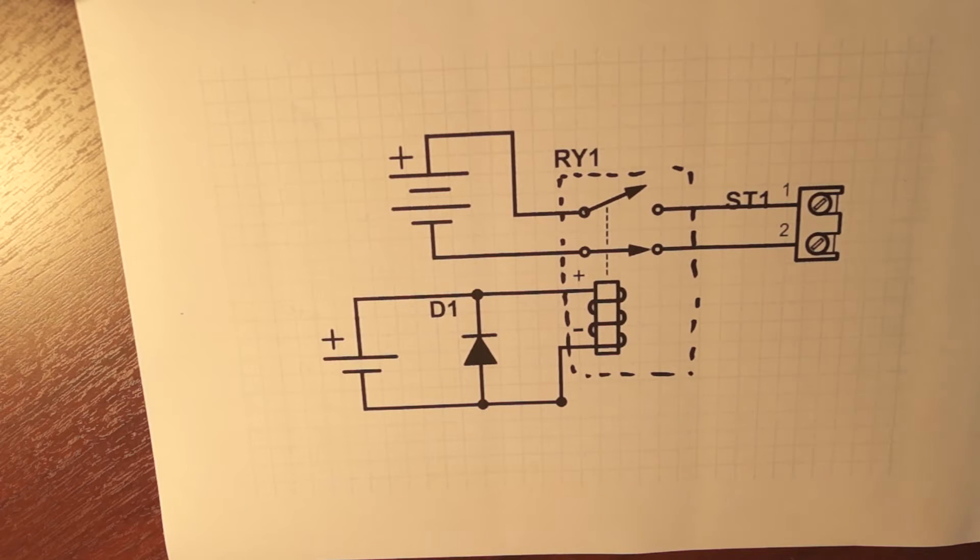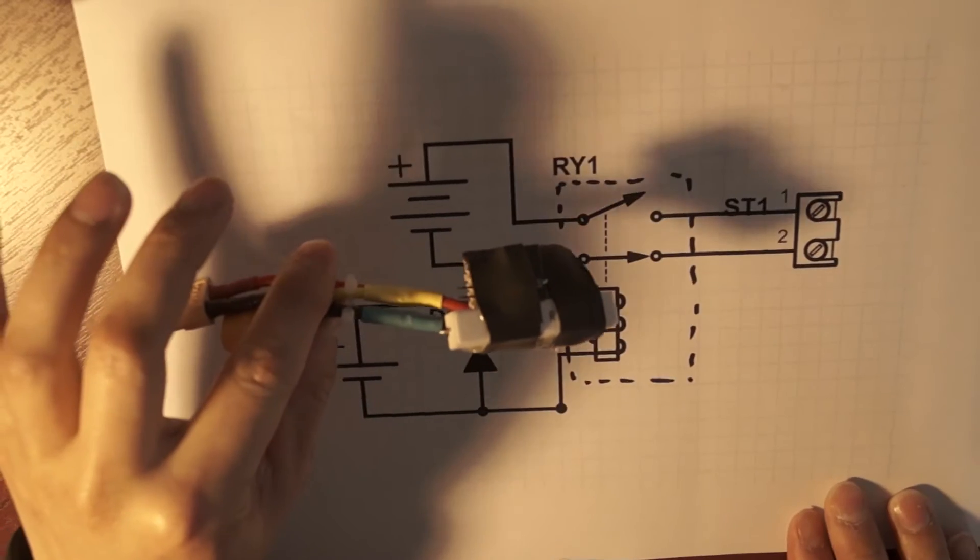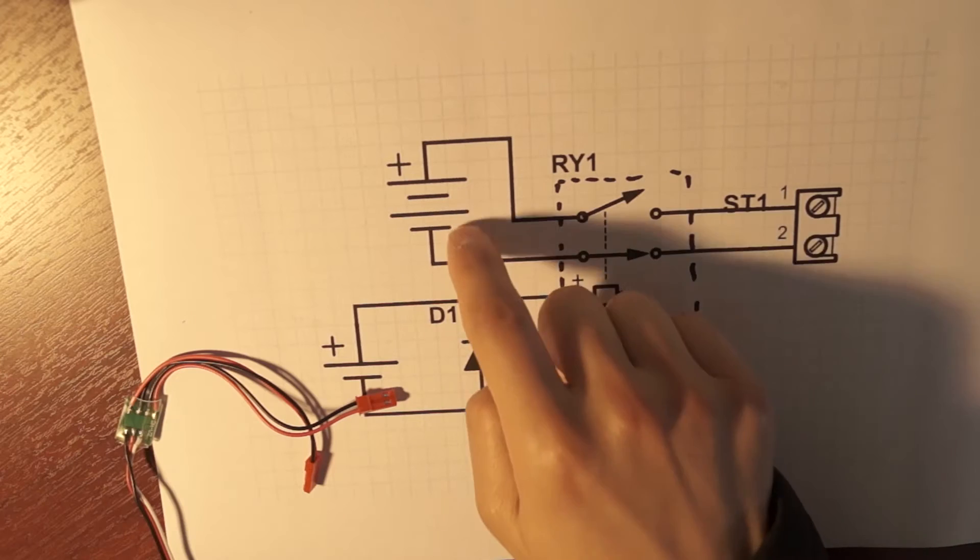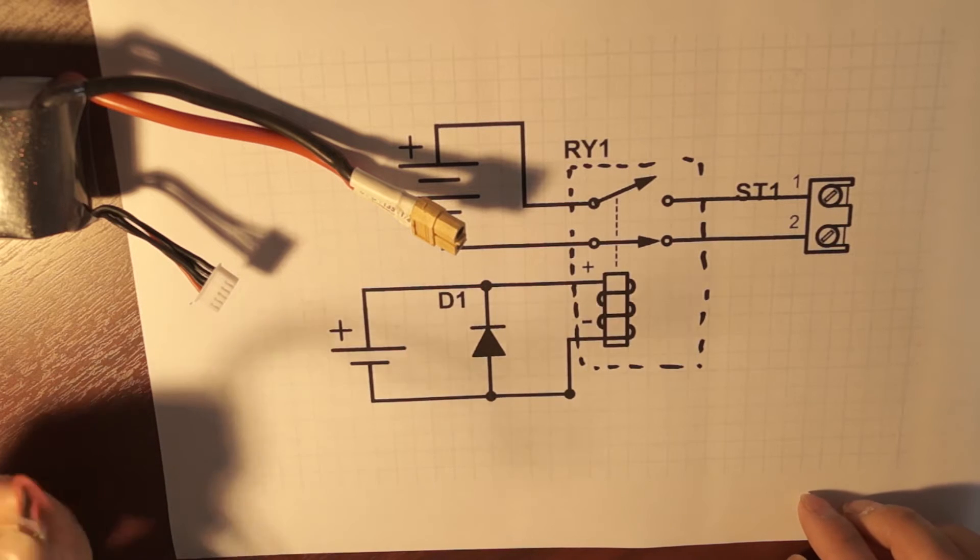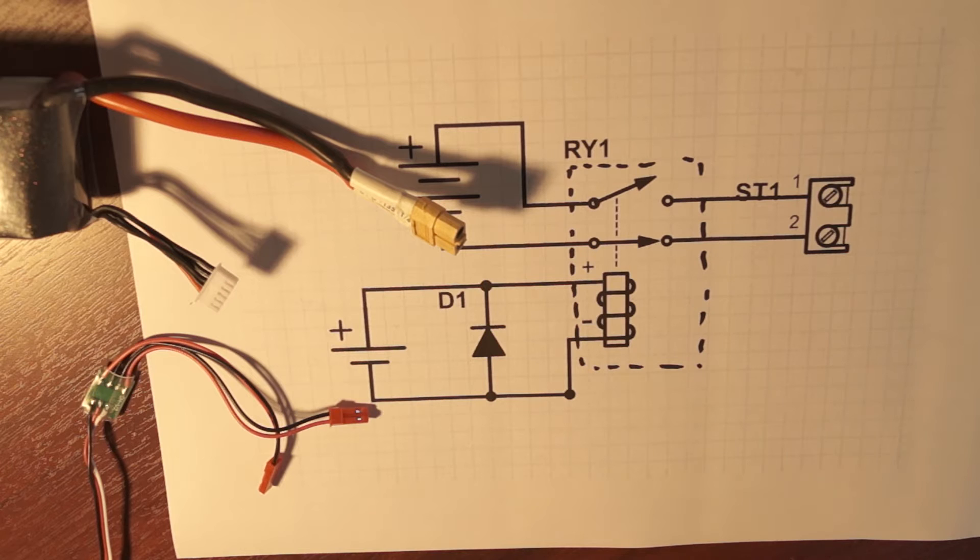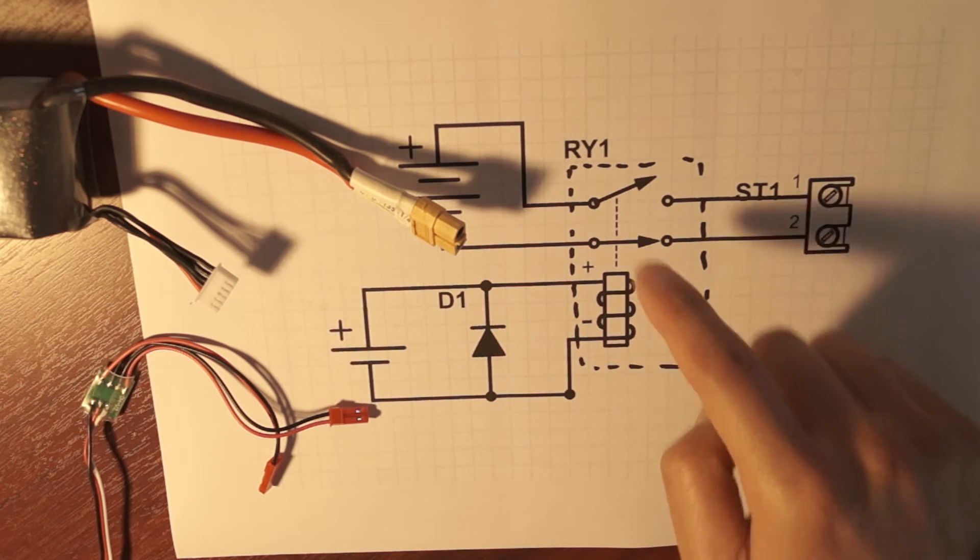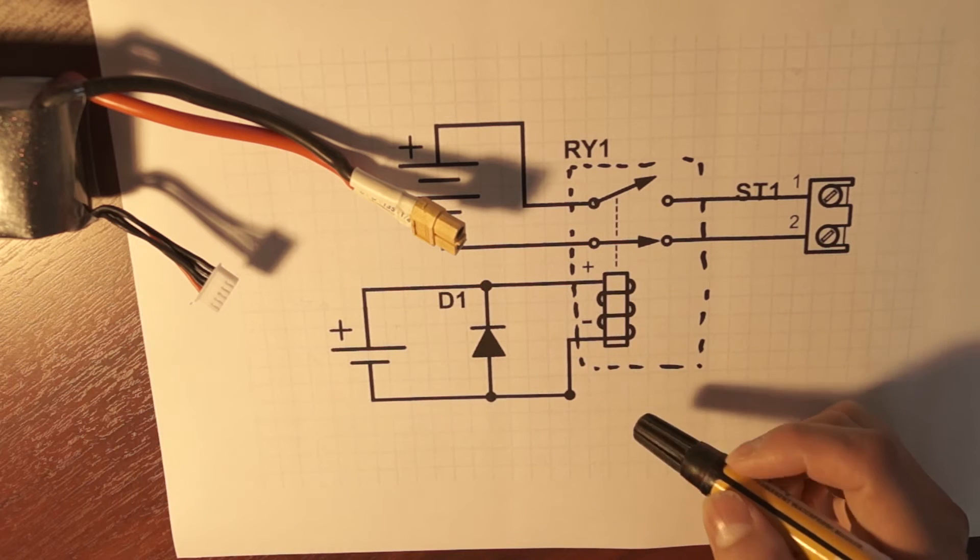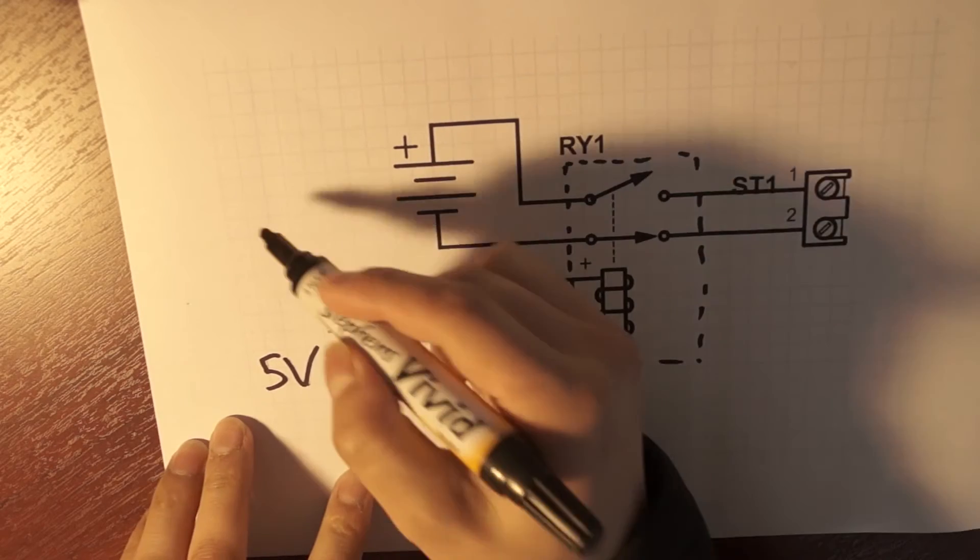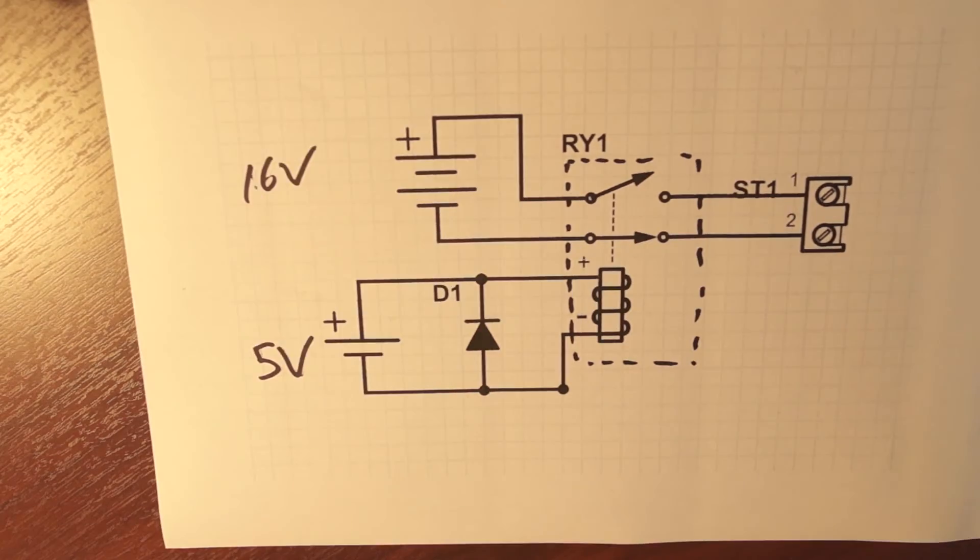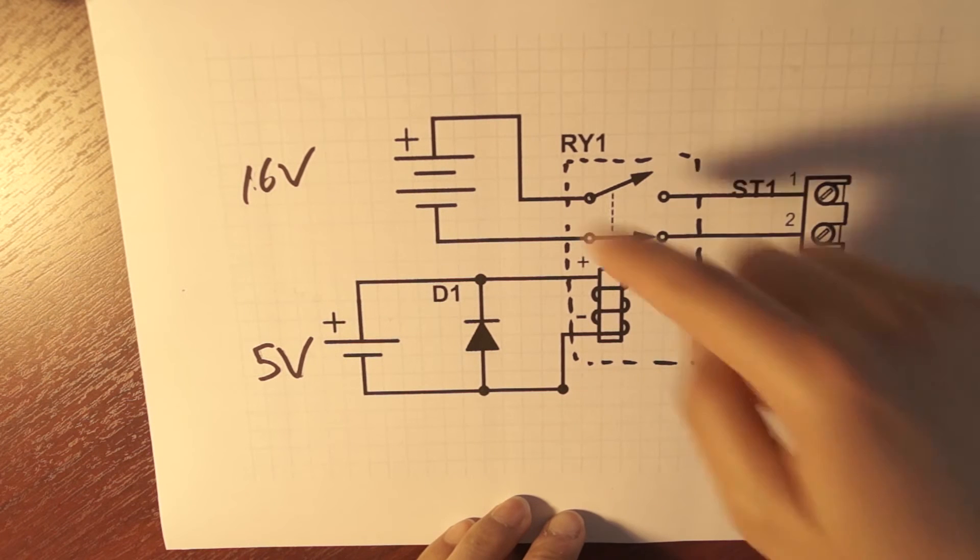So this is the electronic schematic for this driver circuit here. This voltage source represents the output from the RC switch, and this voltage source represents the voltage from the battery. And the RC switch when it's on only puts out 5 volts, and that's what this relay here is for. This relay takes the 5 volt signal from the RC switch to switch on this large 16 volt signal from the battery. And of course the current from the 16 volt battery when it's switched on will flow through here and through to here. This is the terminal which allows you to connect the bulb onto the circuit.